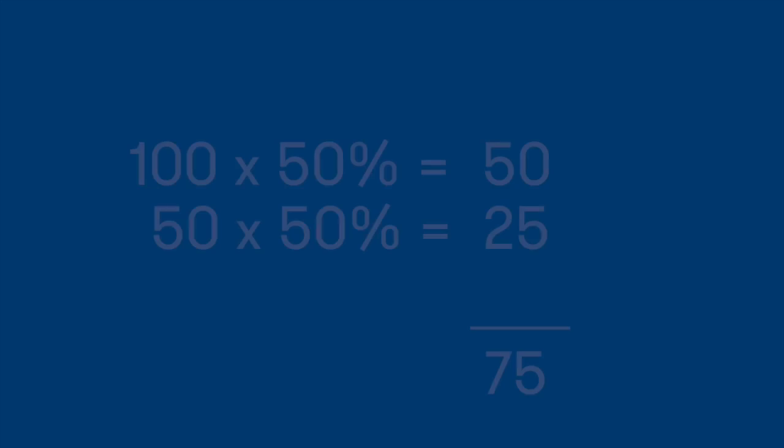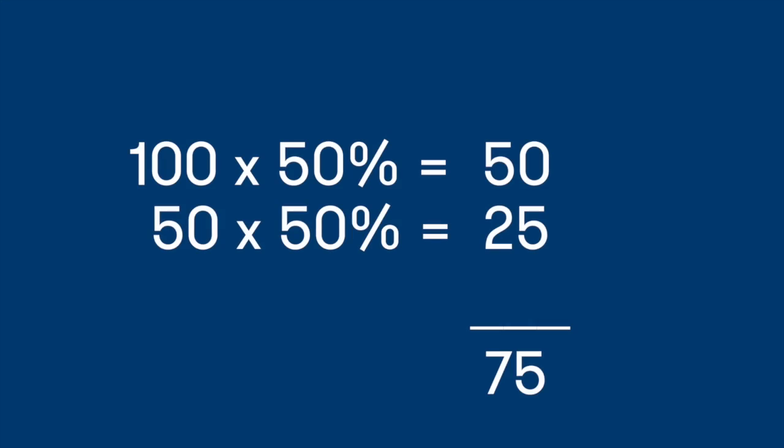Of course, once he does, he'll only be up to 75 total employees, not the 100 he started with. Your boss has been guilty of shifting baselines, applying the 50% to two different starting points.